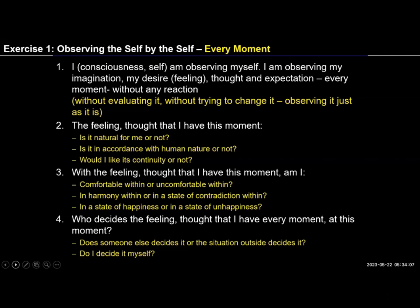However, we may have to remind ourselves about this because we tend to get impacted by the outside many times - when somebody's behavior is not to our liking. So we may have to remind ourselves: who is deciding my feeling? Is it this person outside or am I myself deciding? Since I am deciding, I can choose what kind of feeling to have. I am not bound by the other's behavior because my natural acceptance is still the same, and this is not naturally acceptable to me - it's making me unhappy. So I need not choose this feeling.